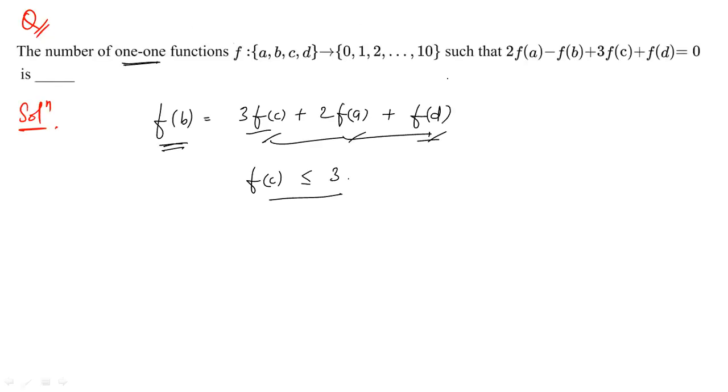The strategy is: take cases on f(c), then sub-cases on f(a), then determine valid choices for f(d). This automatically gives f(b), which is acceptable as long as it is at most 10 and not equal to f(a), f(c), or f(d) — which is guaranteed as long as f(a), f(c), f(d) are chosen as distinct integers.